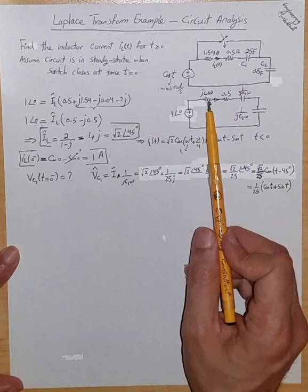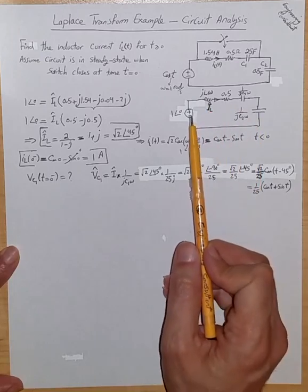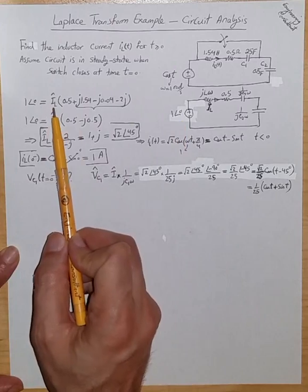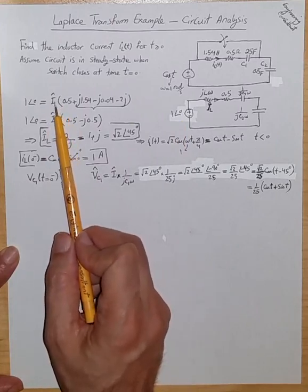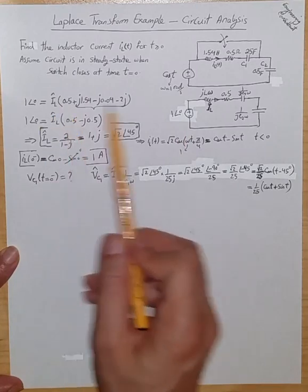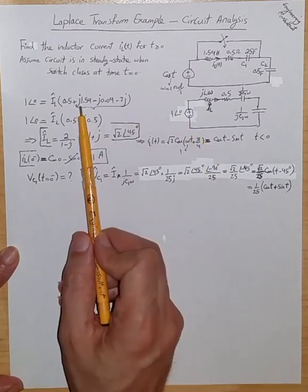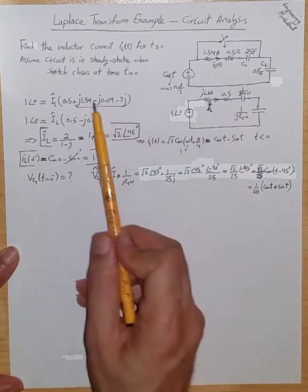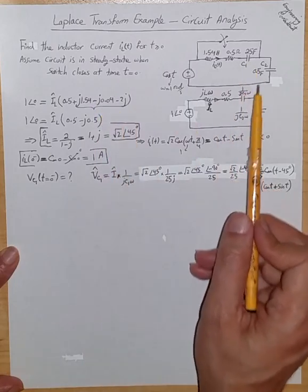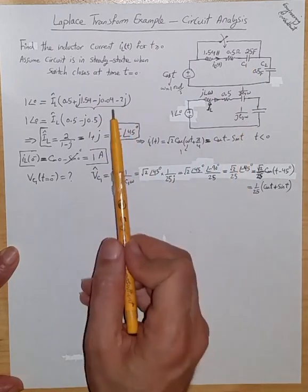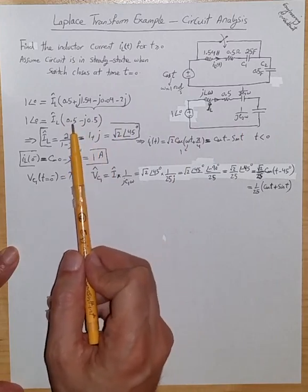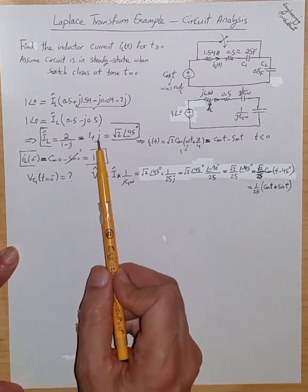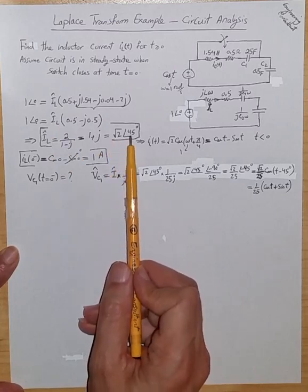We have a series of four impedances — an inductor, a resistor, and two capacitors — in series with a voltage source. Writing KVL: the voltage source equals the phasor current IL times [0.5 + jLω − 1/(jC1ω) − 1/(jC2ω)], which gives IL·[0.5 + j(1/54) − j0.04 − 2j], simplifying to IL·[0.5 − j0.5]. From this, the IL phasor is 1 + j, which is equivalent to √2 at 45 degrees — a phasor with amplitude √2 and phase 45 degrees.